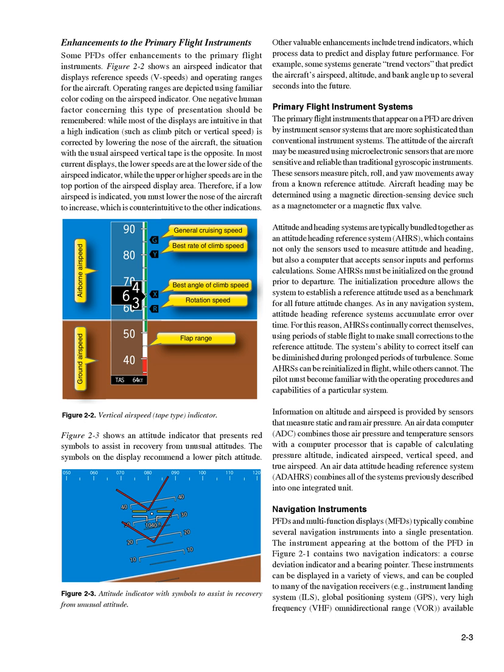As in any navigation system, attitude heading reference systems accumulate error over time. For this reason, AHRSs continually correct themselves, using periods of stable flight to make small corrections to the reference attitude. The system's ability to correct itself can be diminished during prolonged periods of turbulence. Some AHRSs can be reinitialized in flight, while others cannot. The pilot must become familiar with the operating procedures and capabilities of a particular system.